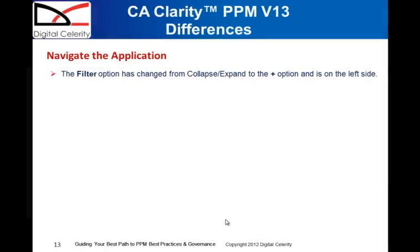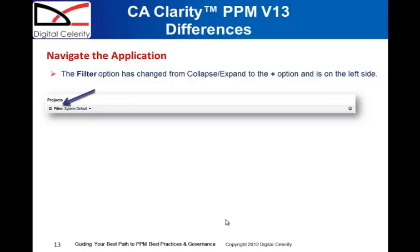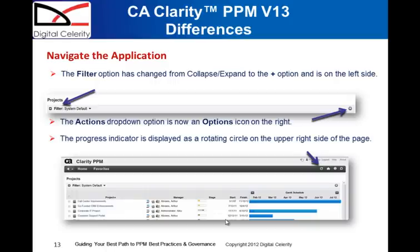In Clarity version 13, some other changes to navigation include changes to the filter option. In previous versions of Clarity, you would collapse and expand the filter. Now, you use the plus on the left-hand side of the page to open the filter, and minus to close it when you've finished. There's also an Actions dropdown where you can configure the page you're on, and a progress indicator that updates the page and shows that progress is being made.